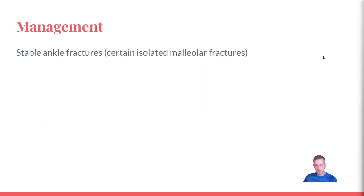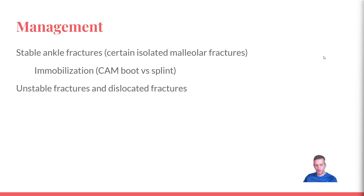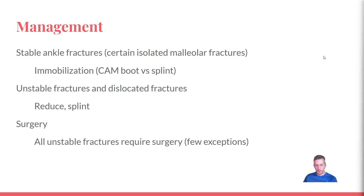In the acute setting, stable ankle fractures can be immobilized with a cam boot or splint — these are typically isolated malleolar fractures meeting criteria such as being a one-part fracture that doesn't gap on stress views. Unstable and dislocated fractures require reduction and splinting. Essentially all unstable fractures require surgery, with few exceptions for poor surgical candidates, non-ambulatory patients, or those unable to participate in rehab.